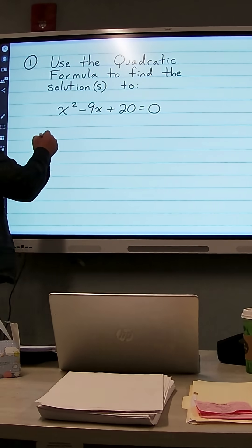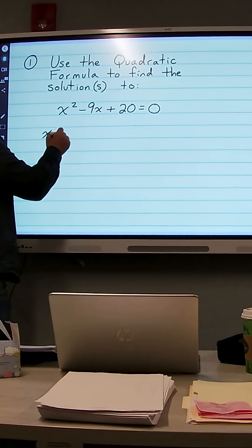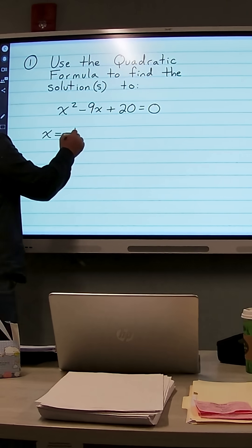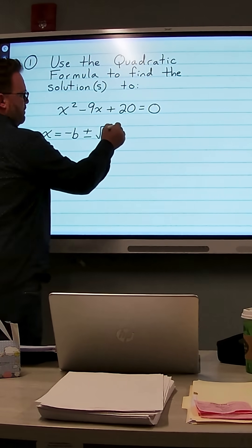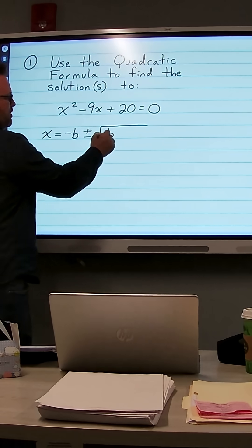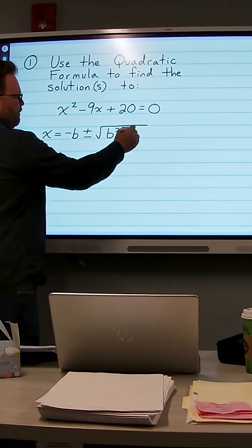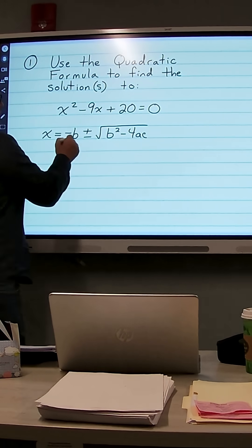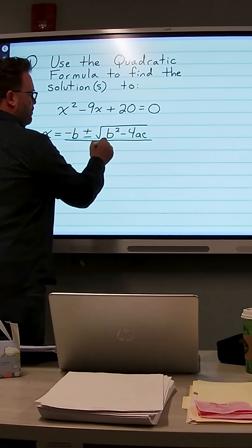Just as a reminder, the quadratic formula is x equals negative b plus or minus the square root of b squared minus 4ac all over 2a.